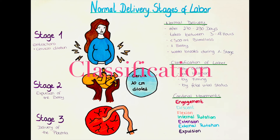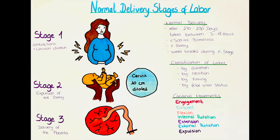How can we classify labor? Labor can be classified by different characteristics. One way to classify labor is by the duration of the birth. There is the partus precipitatus or precipitous labor, which is a delivery that is especially quick — less than 3 hours from the onset of labor to the delivery of the baby. The opposite is protracted labor, also called labor dystocia or prolonged labor, which is when labor is progressing much slower than usually expected.